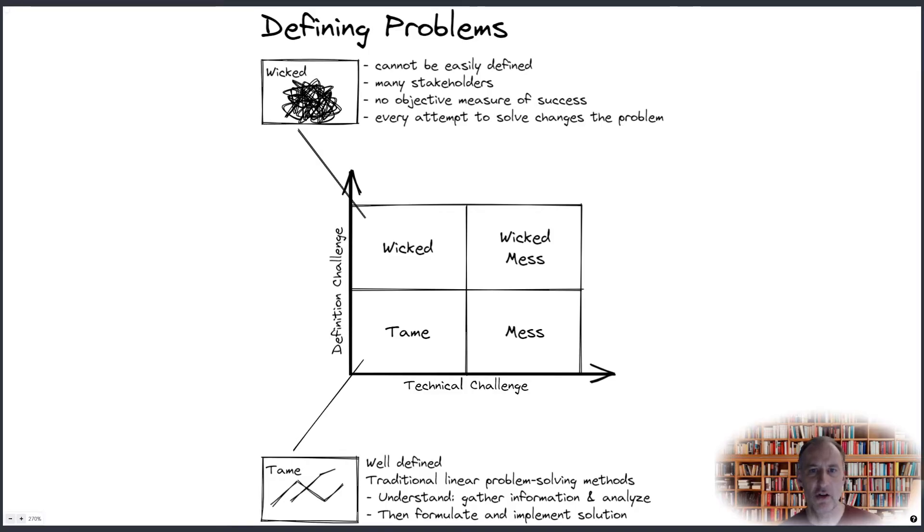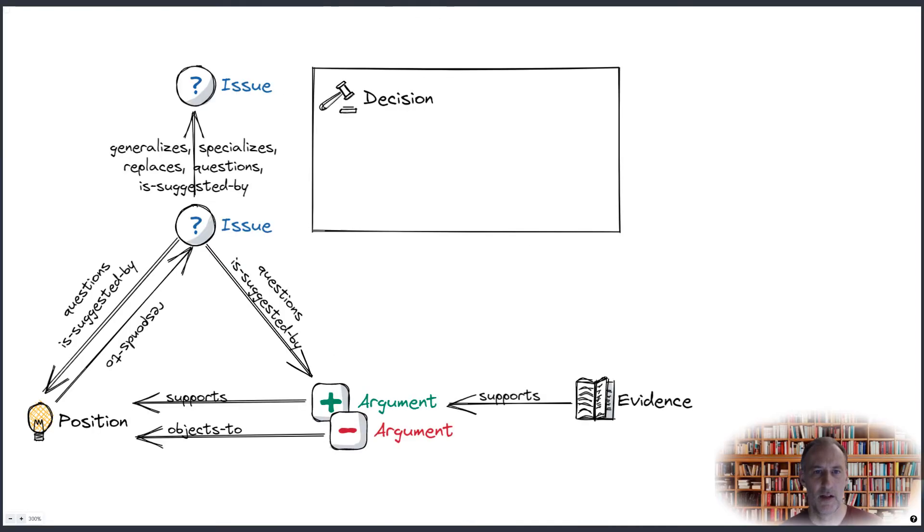IBIS is an argumentative approach to discussing and solving wicked problems. As a side note, wicked problems, as opposed to tame problems, are difficult to define, involve many stakeholders, lack an objective measure of success, and every attempt to solve them changes the problem.